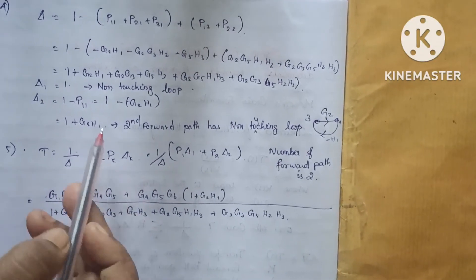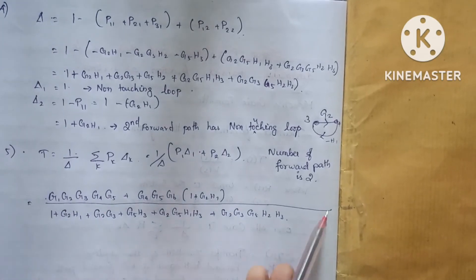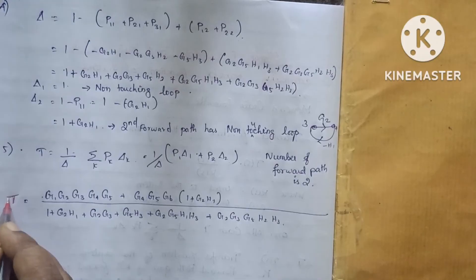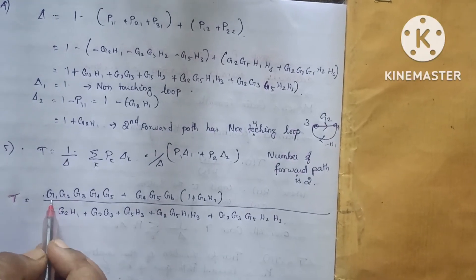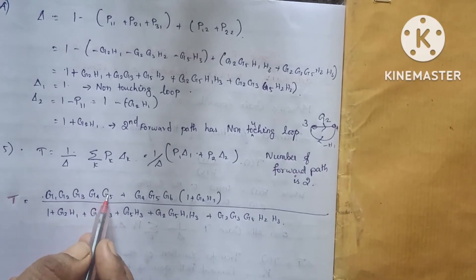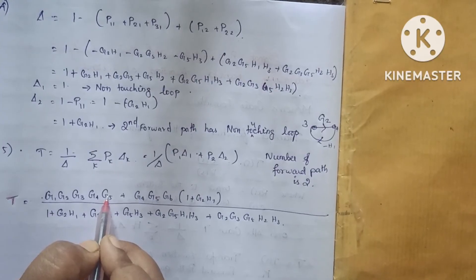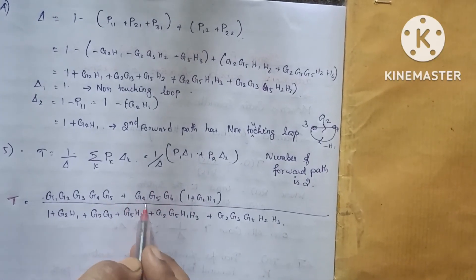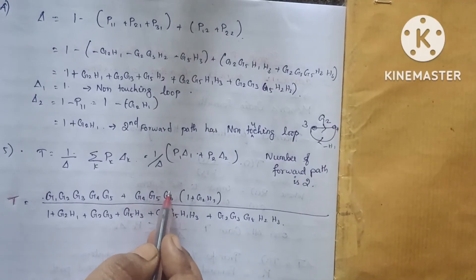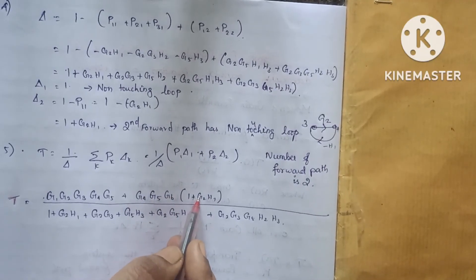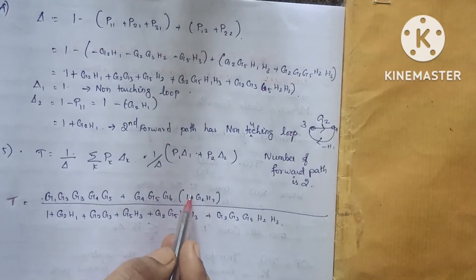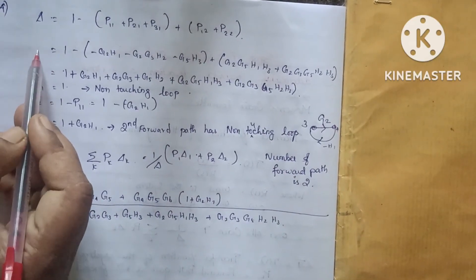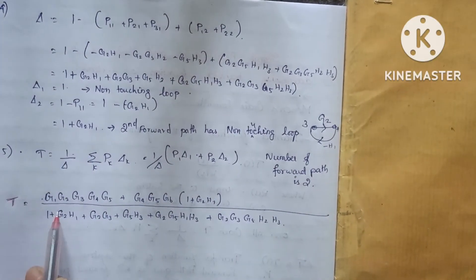That is how we calculate the formula. The transfer function T equals G1·G2·G3·G4·G5 times delta-1, plus the second forward path times its delta-2, all divided by delta.